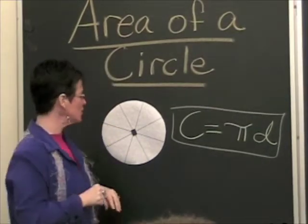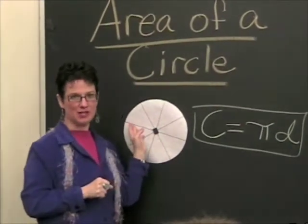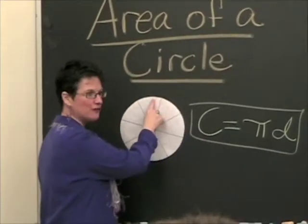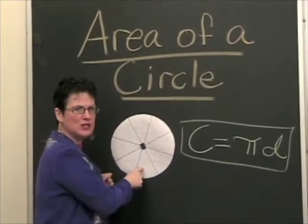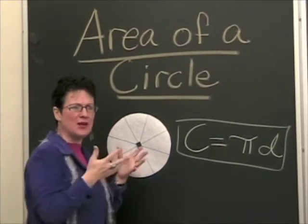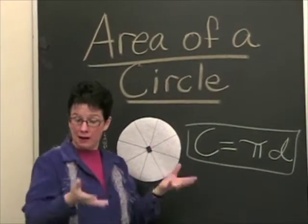When they came upon the circle, they really had the ultimate challenge. Because here you have a continuous curve, and somehow they had to get rid of the continuous curve and turn this figure into something that they could actually measure a base and a height from.